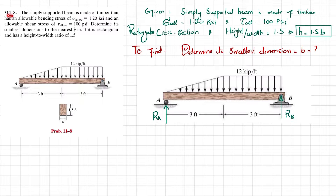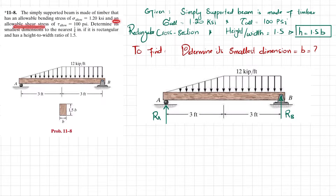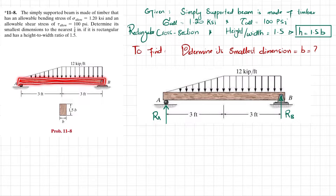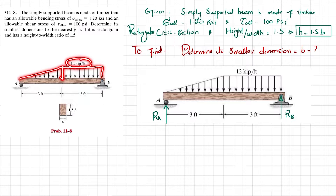Welcome back. Problem 11-8: a simply supported beam is made of timber with an allowable bending stress of 1.20 ksi and an allowable shearing stress of 100 psi. The beam has a uniformly increasing load up to 3 feet and a uniformly distributed load of 12 kips per foot over a length of 3 feet.